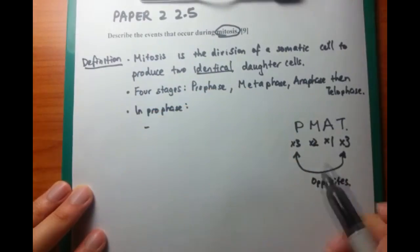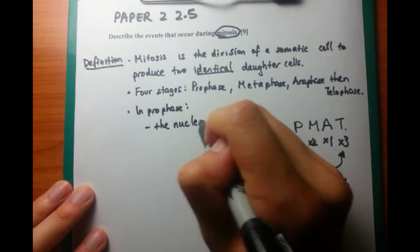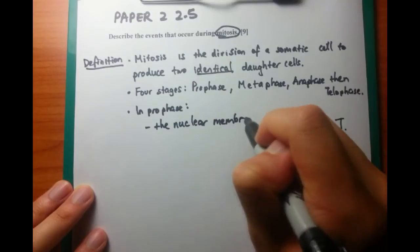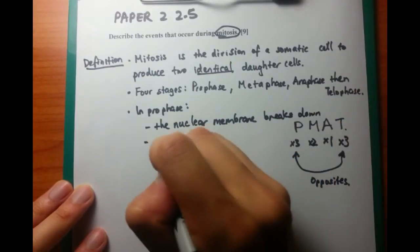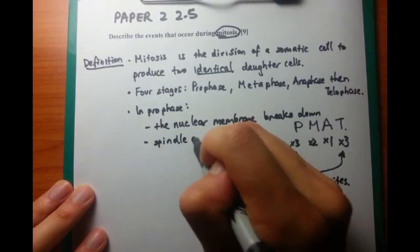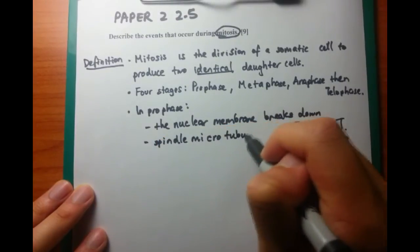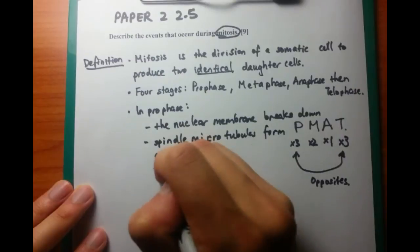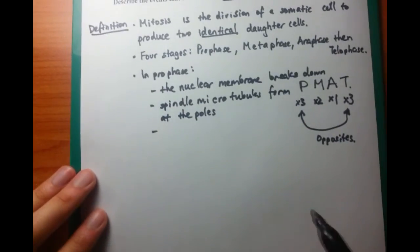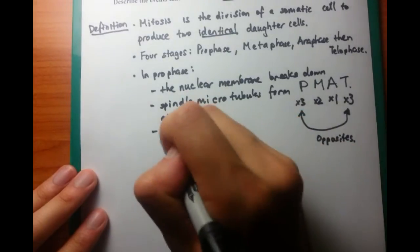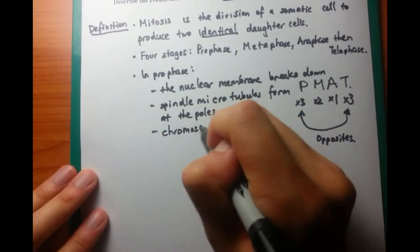Now, in prophase, let's talk about this first step. So things appearing and disappearing. The first thing that disappears is the nuclear membrane, which breaks down. And the things which appear are the spindle microtubules. They form at the poles. And the third thing is that the chromosomes, they supercoil. Think of supercoiling as chromosomes just appearing, or condensing.